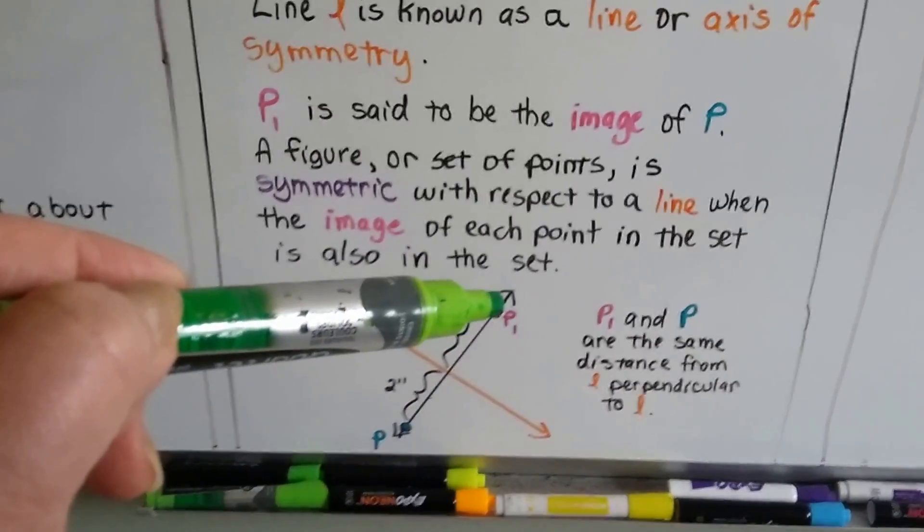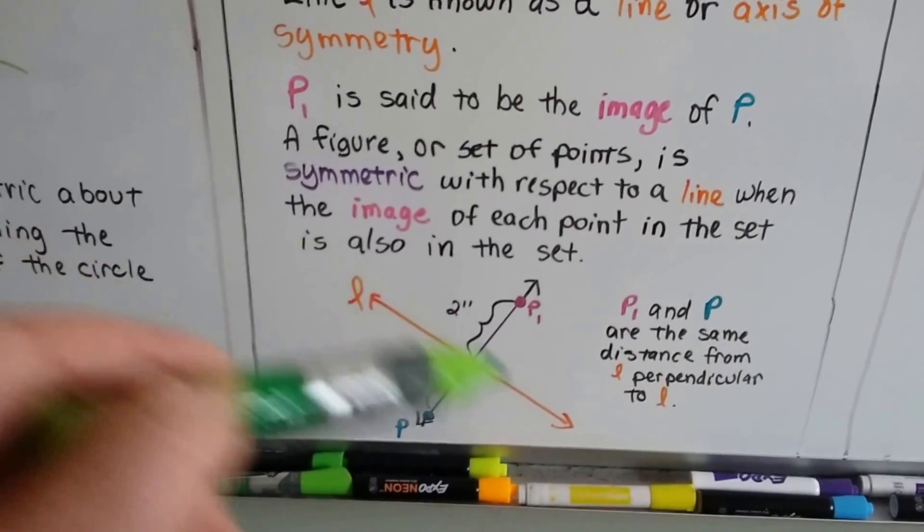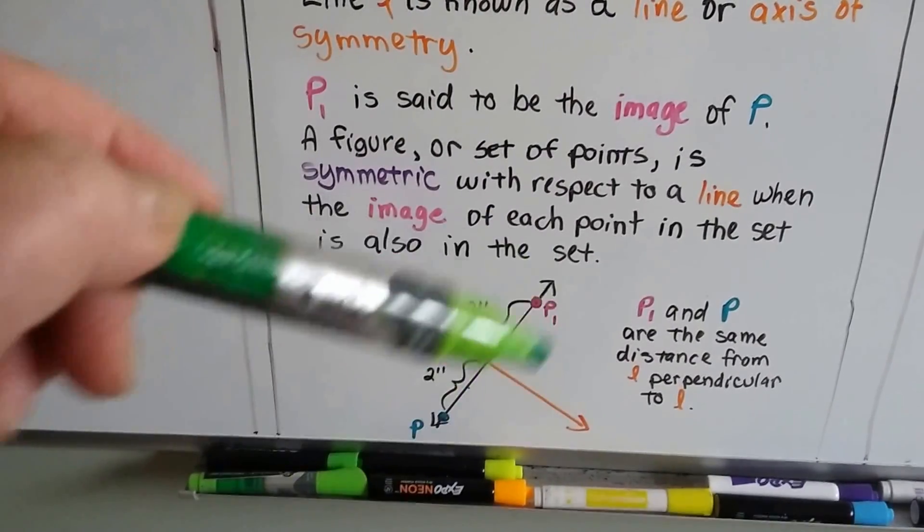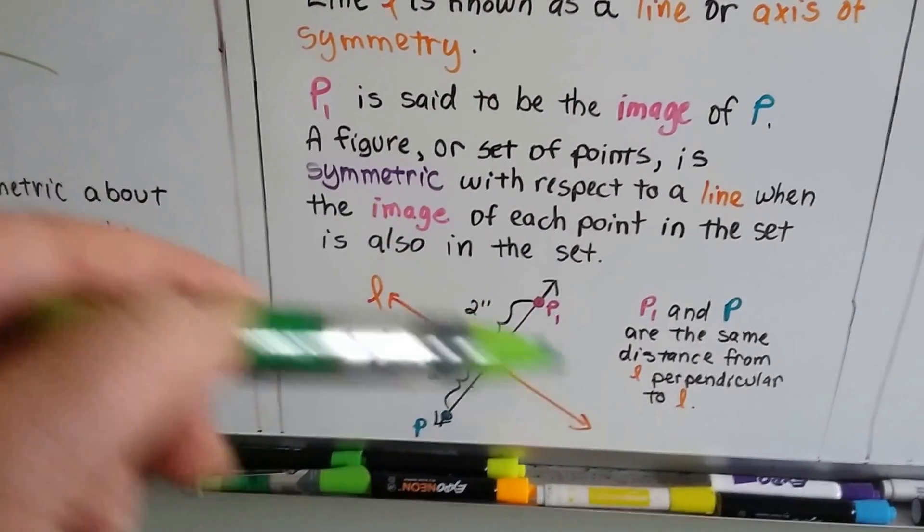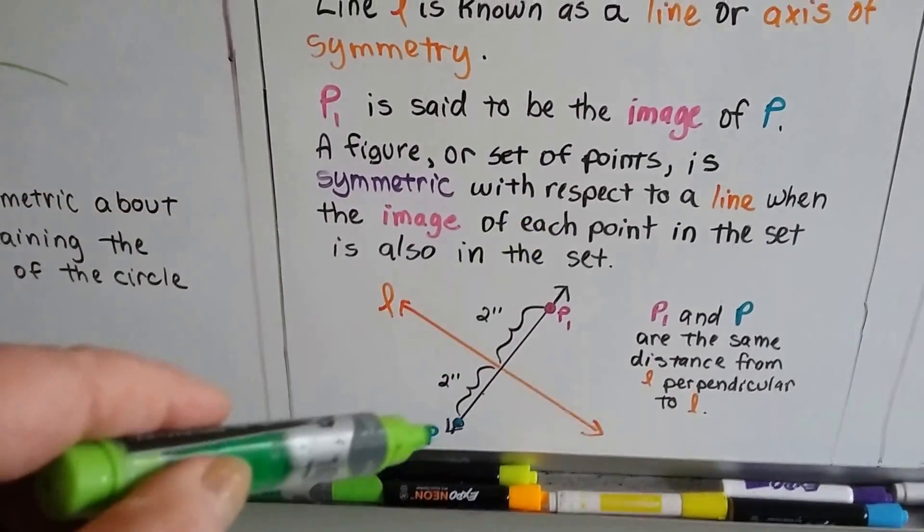and p sub 1 is right here, and they're both 2 inches from this line L. So, see how they're both the same distance? They're symmetric with respect to line L because they're the same distance from L and they're measured along a perpendicular.